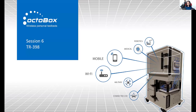Hello everyone and welcome to tutorial number six. Today we have the topic of TR-398, which is the first performance standard developed by the Broadband Forum for Wi-Fi.